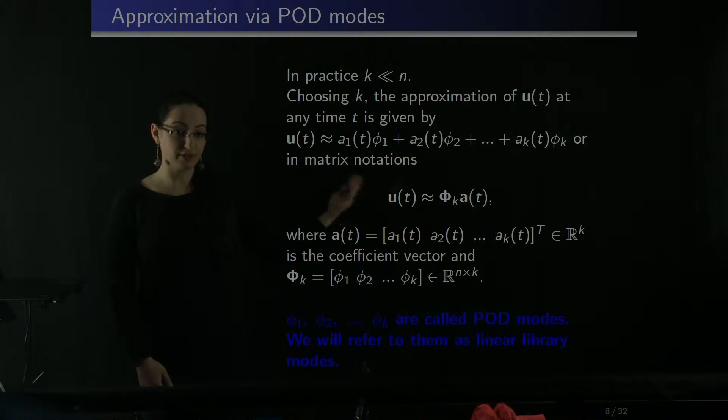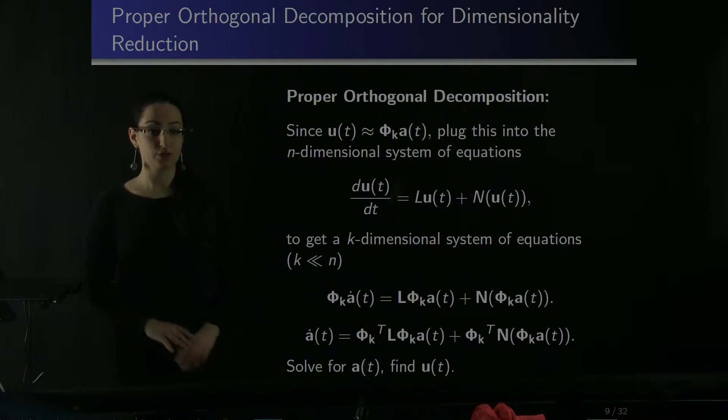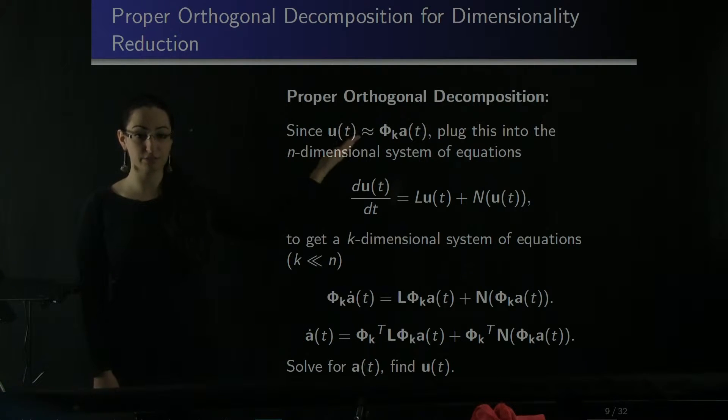Of course, if we have A, we can reconstruct our solution U. We will refer to these vectors phi_1 to phi_k as either POD modes or linear library modes. We have our approximation, and we have a system of differential equations to solve. We'll simply plug in this approximation into the system. Then we'll get a system of ordinary differential equations for A. Remember that A is k-dimensional and k is much smaller than n. Solving this system for A, we can recover our solution U. So instead of solving this large n-dimensional system, we can solve this k-dimensional system and recover U.